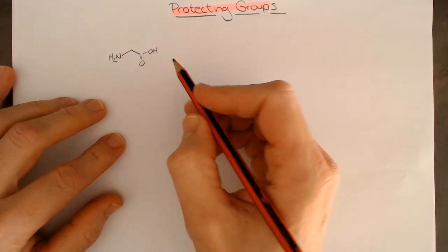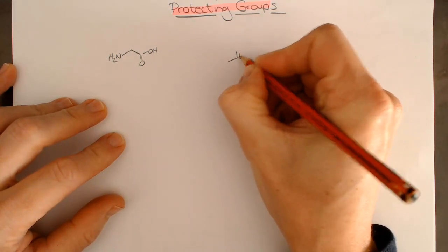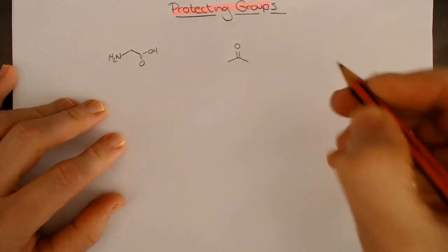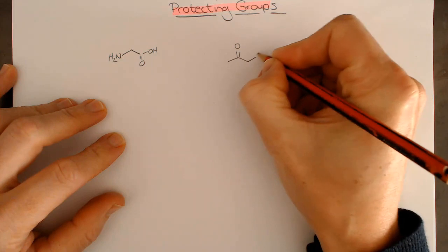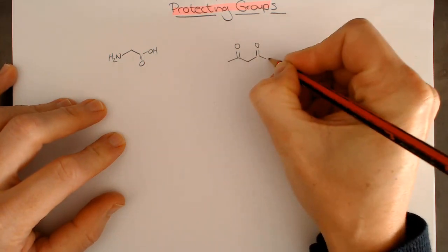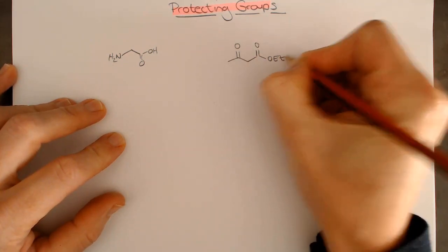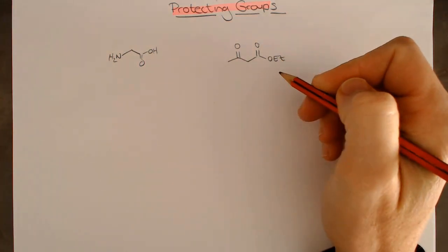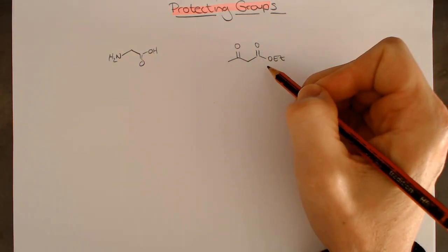The one that you've already covered is a protecting group for the carbonyl group. Drawing acetone over here, this is a classic example. Here we have a ketone and an ester.